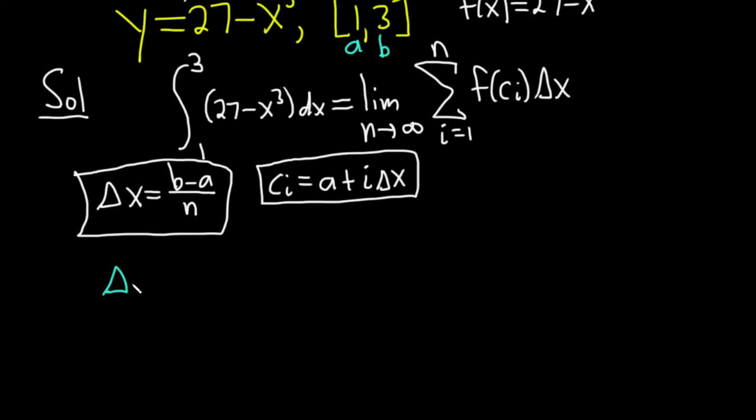Delta x is b minus a so it's 3 minus 1 over n. Super easy. So 2 over n. Delta x is equal to 2 over n.